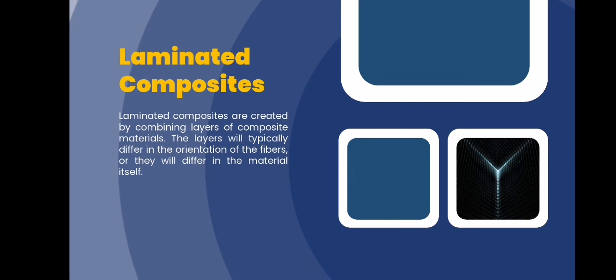The last is laminated composites. Laminated composites are created by combining layers of composite materials. The layers will typically differ in the orientation of the fibers or they will differ in the material itself. And that's all. Thank you.